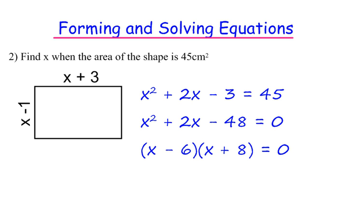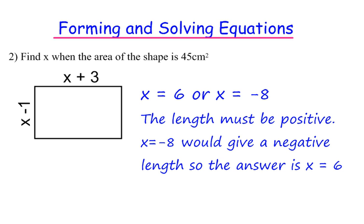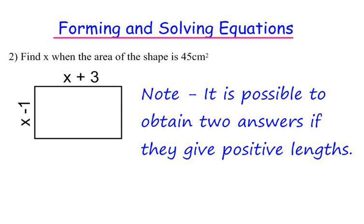So either x minus 6 equals 0 or x plus 8 equals 0. So x equals 6 or x equals minus 8. Now, for those two values, the length of any shape needs to be positive. So x minus 8 would give me minus 9, which would give me negative length. So we can only use the answer x equals 6. We can actually get two answers from any question as long as they both give positive lengths.